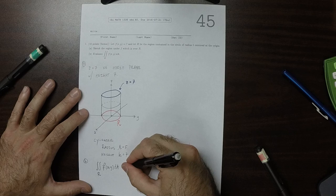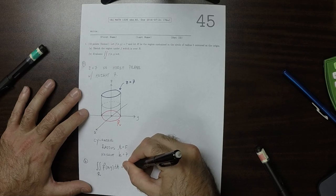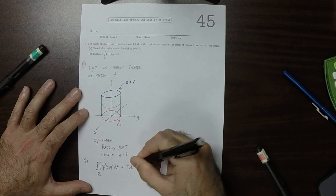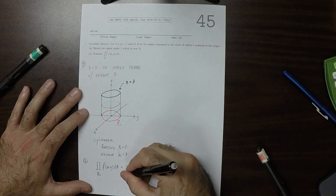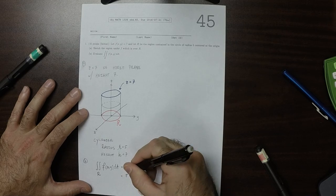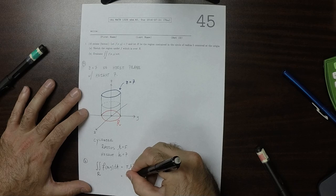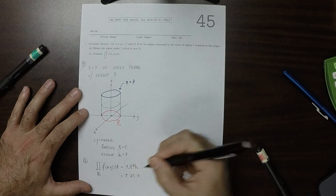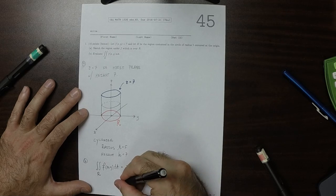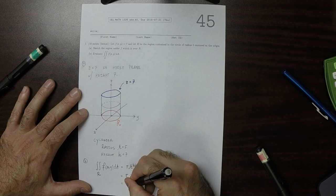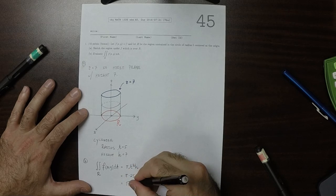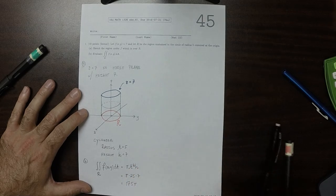So the volume is pi r squared h. That's pi times 25 times 7, which is 175 pi. And that's the answer.